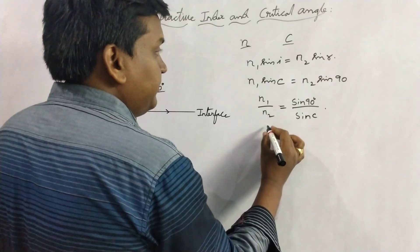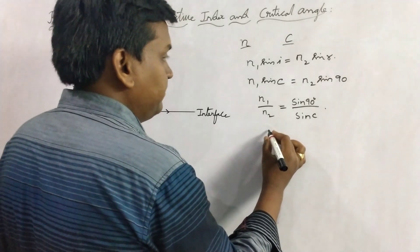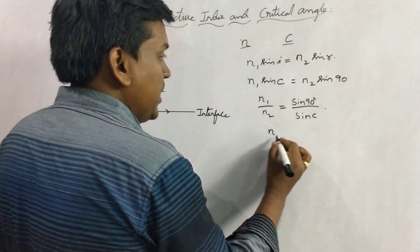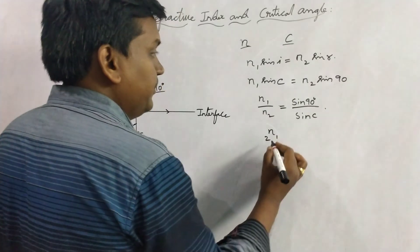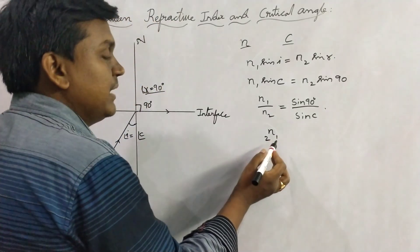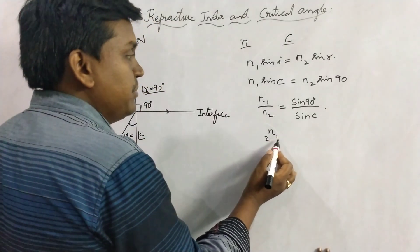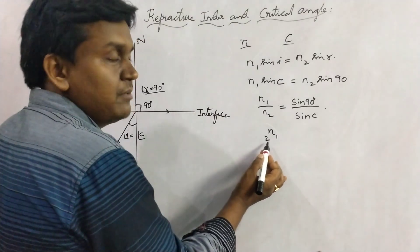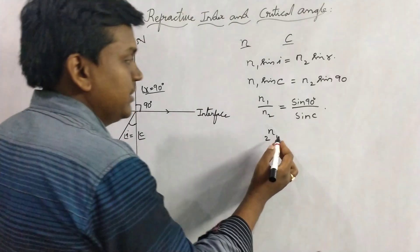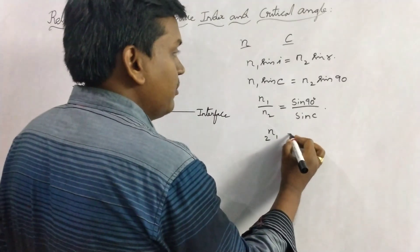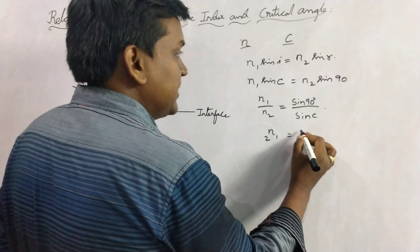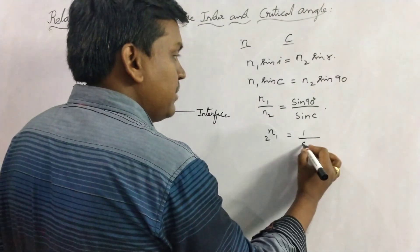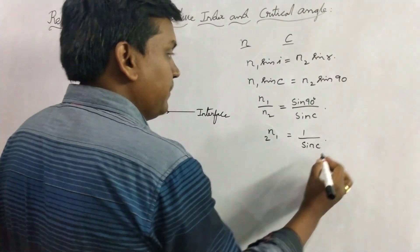This can be written as N1 2, that means the refractive index of medium 1 relative to medium 2. So N1 2 equals sin 90, whose value is 1, divided by sin C. That gives us 1 by sin C.